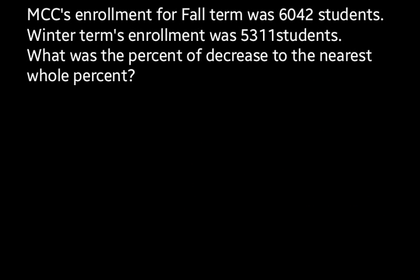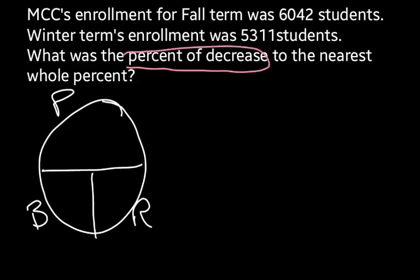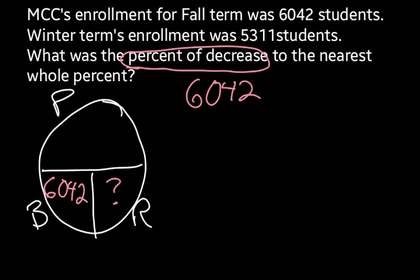For this last question, we have a slightly different problem. MCC's enrollment for fall term was 6,042 students. Winter term's enrollment was 5,311 students. What was the percent of decrease to the nearest whole percent? Making my PBR circle, we don't have a rate — we're looking for the rate, since it asks what is the percent of decrease. We started with 6,042 in fall term, our original amount, as our base. We need to figure out the portion that represents the percent of decrease — how much did it go down — so we calculate 6,042 minus 5,311.